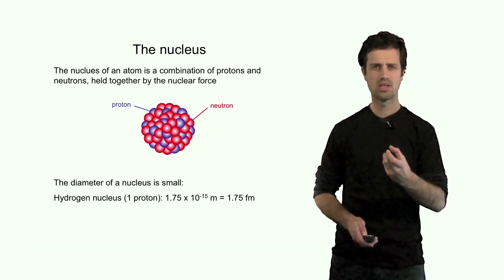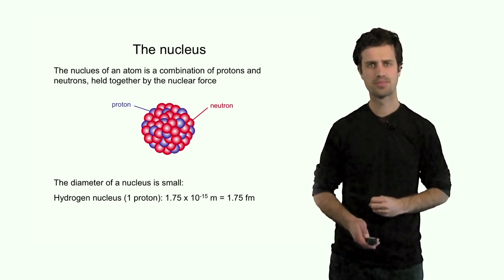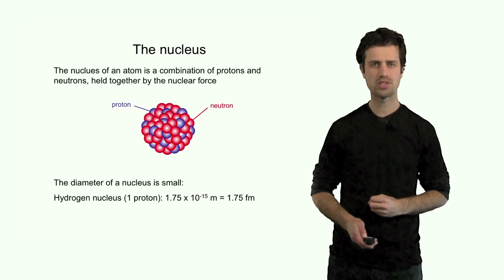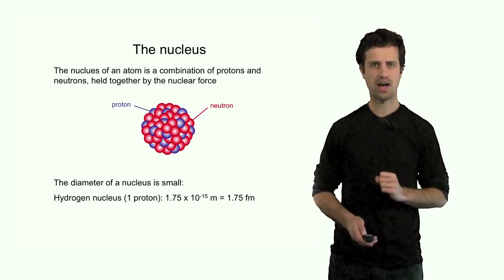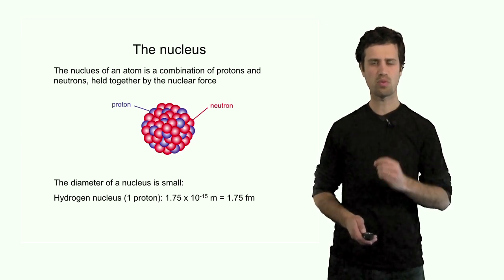The hydrogen nucleus contains only one proton. And the size of this single proton is 1.75 × 10⁻¹⁵ meters, or 1.75 femtometers.